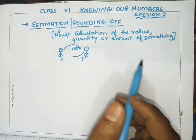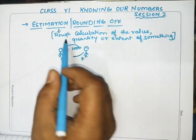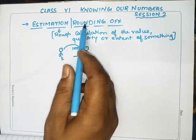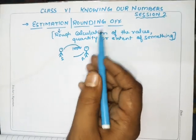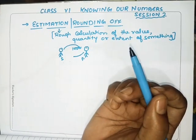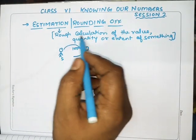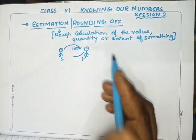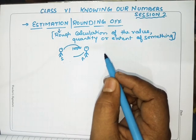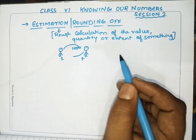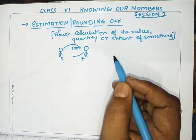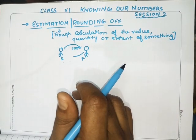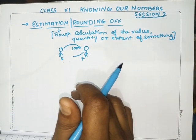Hello students, today I'm back with a new topic: estimation or rounding of numbers. Estimation is the rough calculation of the value, quantity, or extent of anything. I will take an example to show what estimation means and what rounding off means.